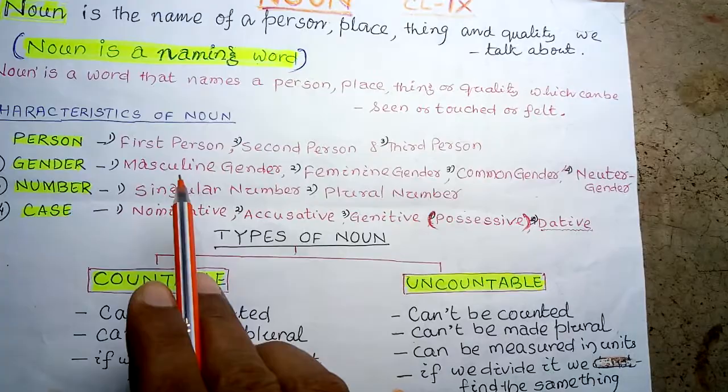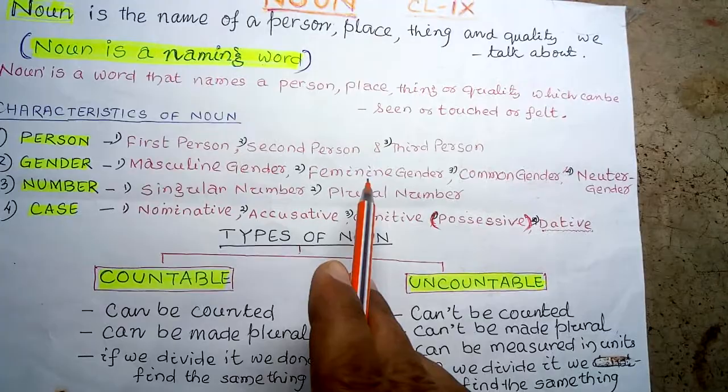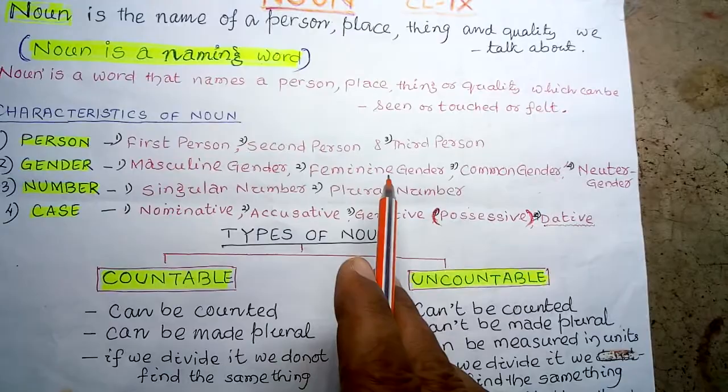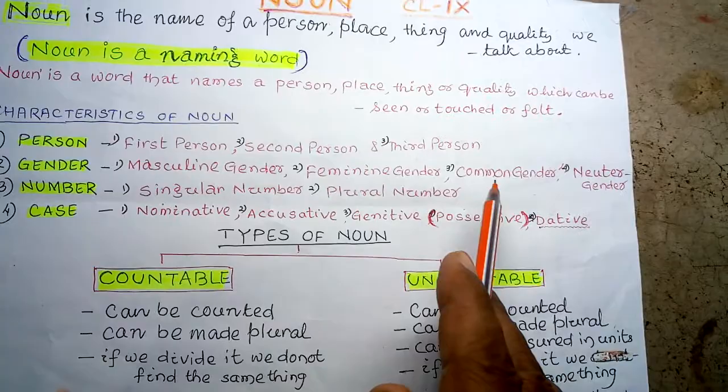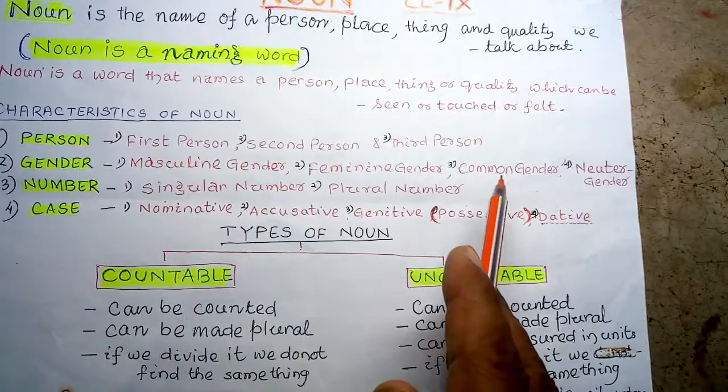Feminine gender refers to female — for example, girl, woman. Common gender means child or baby, where we cannot determine whether it is male or female. So this is common gender.